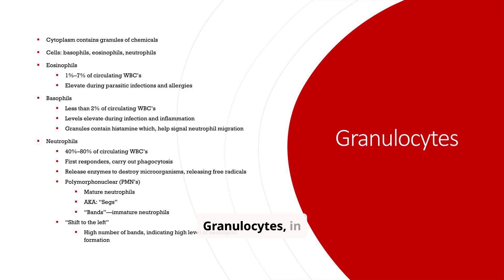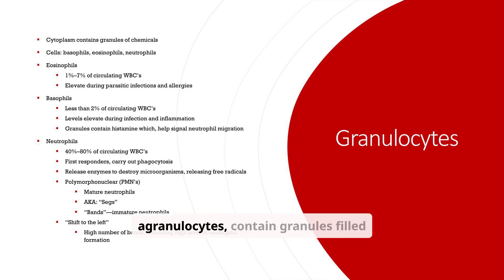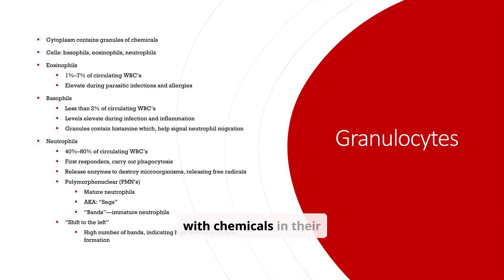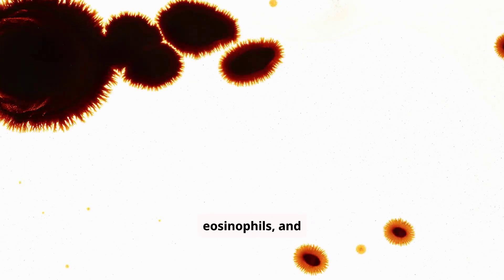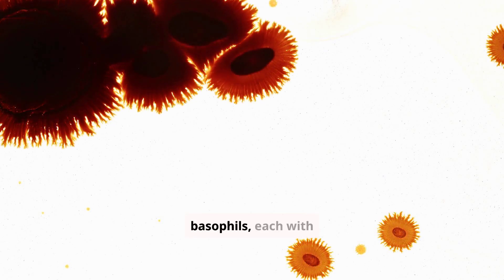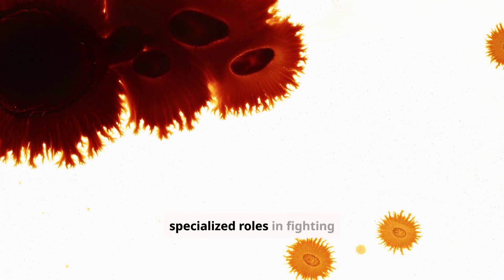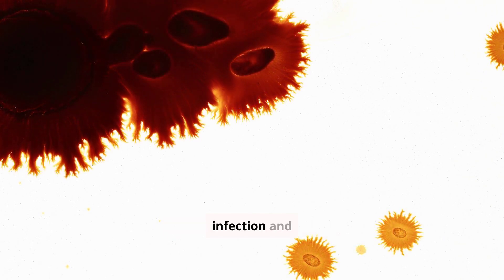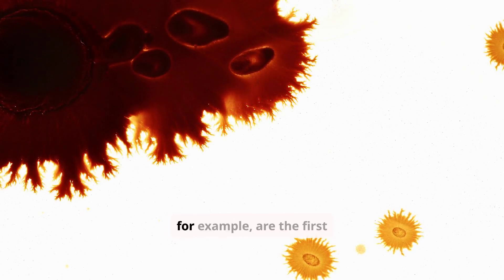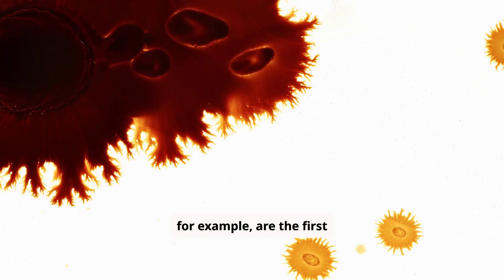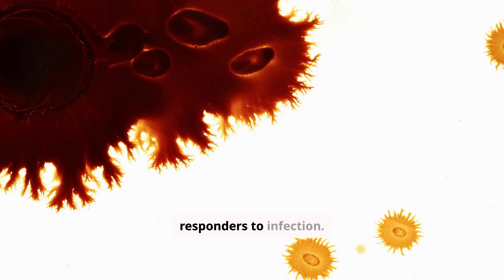Granulocytes, in contrast to agranulocytes, contain granules filled with chemicals in their cytoplasm. This group includes neutrophils, eosinophils, and basophils, each with specialized roles in fighting infection and inflammation. Neutrophils, for example, are the first responders to infection.